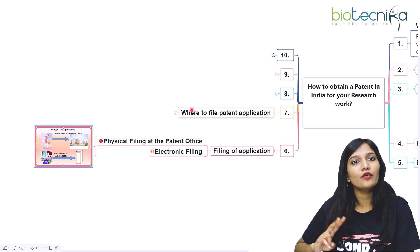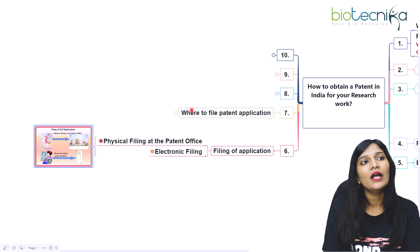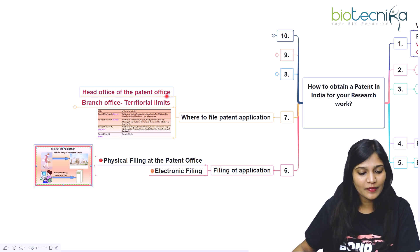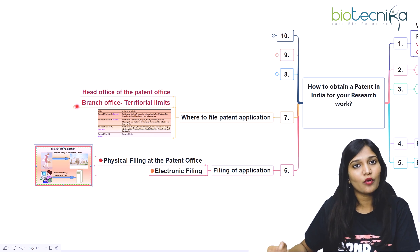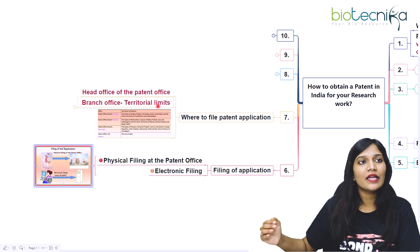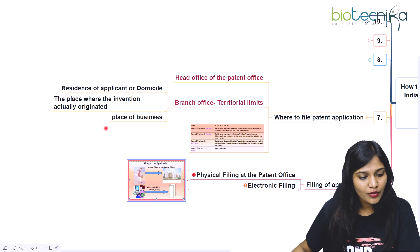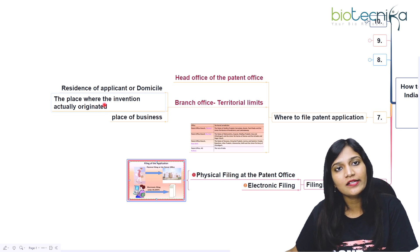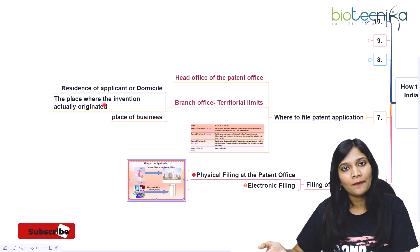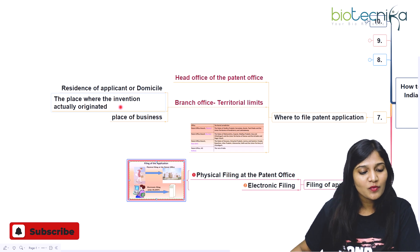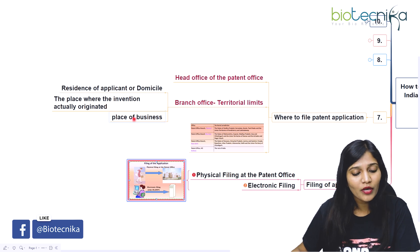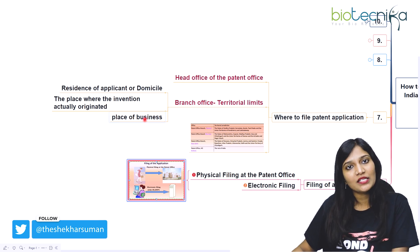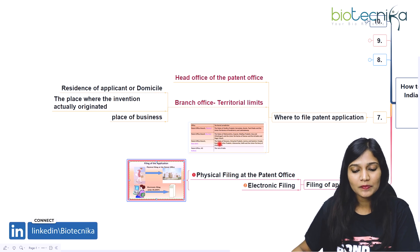Where to file the patent application? You can go to the head office or to branch offices. There are territorial limits — you have to be a resident or domiciled in that locality, or apply where the invention originated. For example, if you are located in Bangalore but did your research in New Delhi, you can file your patent in New Delhi. Companies can apply where their organization is located.